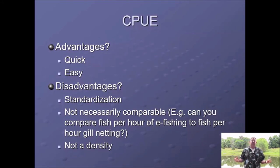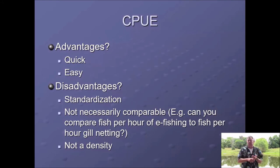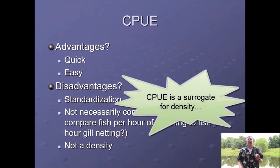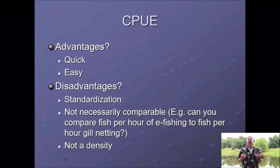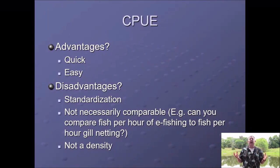The biggest issue is this is not actually a density. A density is when you count the number of fish in a given area and determine how many fish are in that area. CPUE is a surrogate for density and is an estimated density. We assume that if the density goes up the CPUE goes up, and that's a fair assumption, but it's not necessarily true. That is a disadvantage of using CPUE. Having said that, most of the time we are going to be using CPUE because we simply don't have time to estimate the actual number of fish in the population.